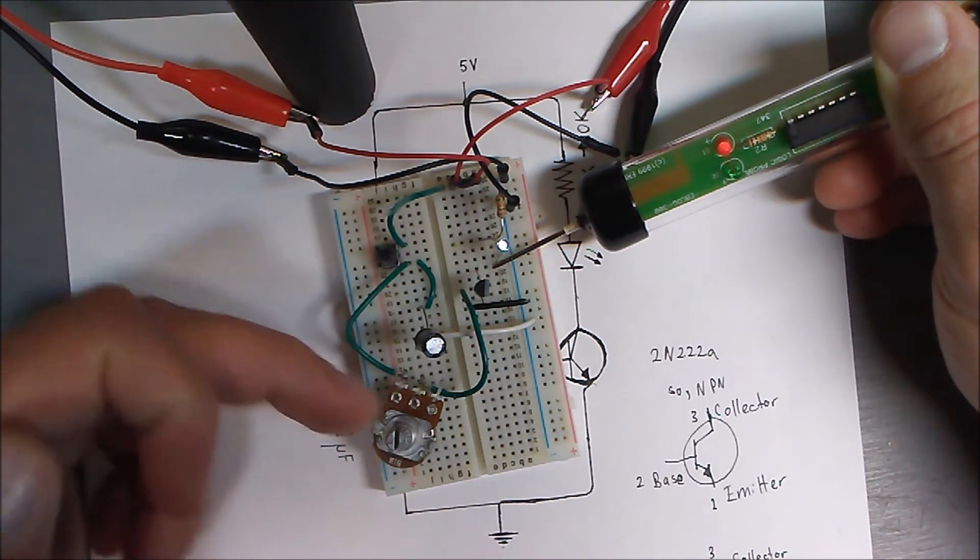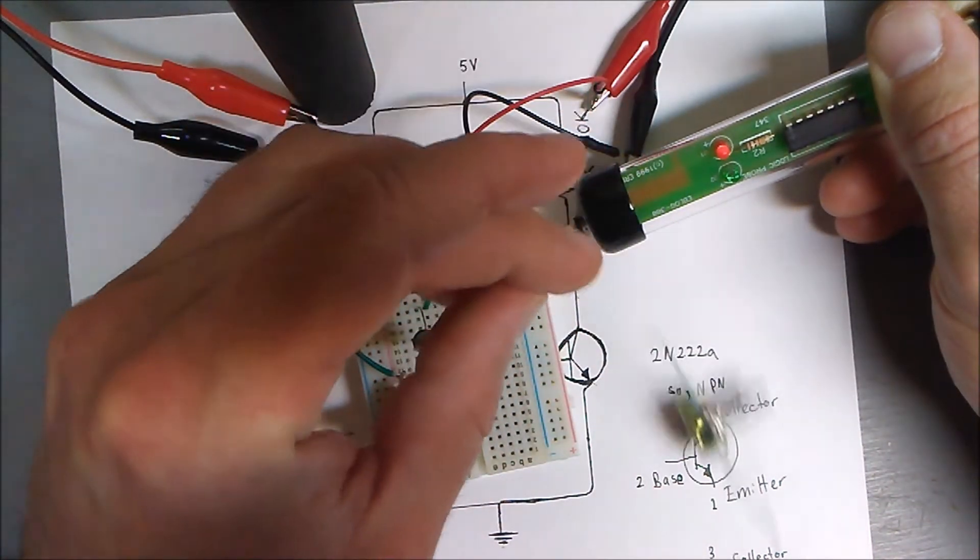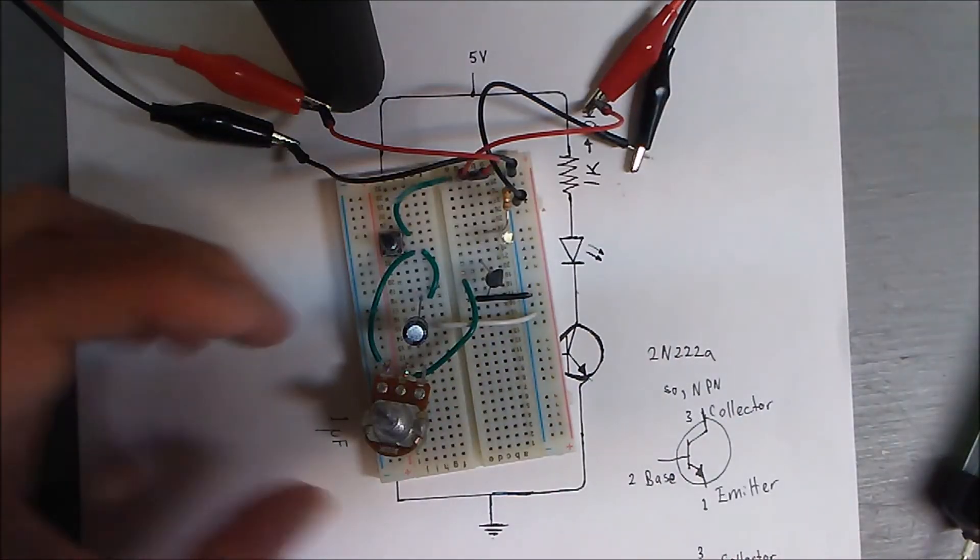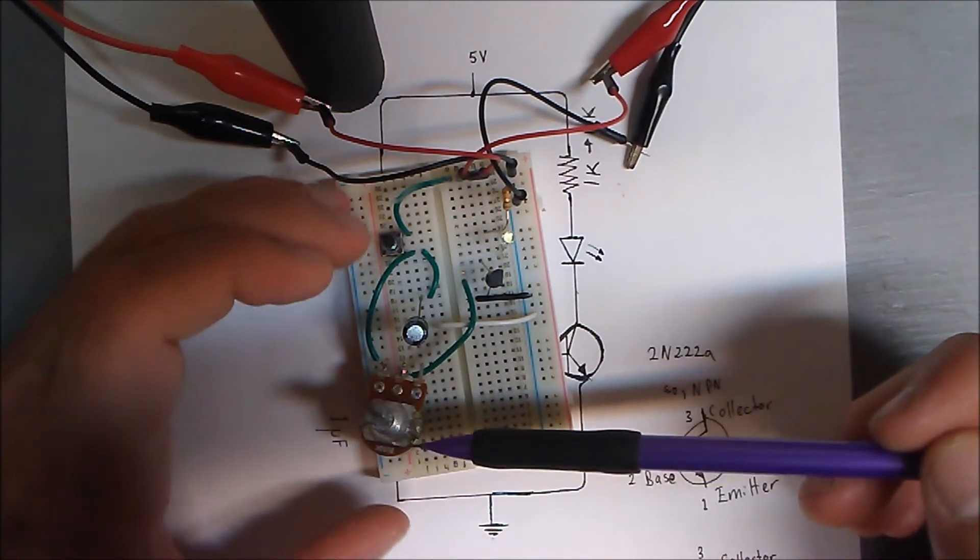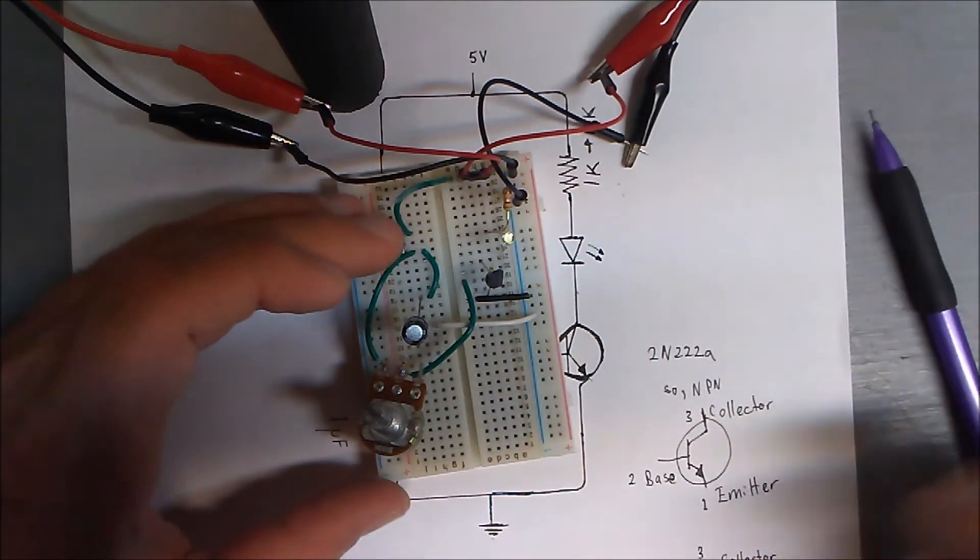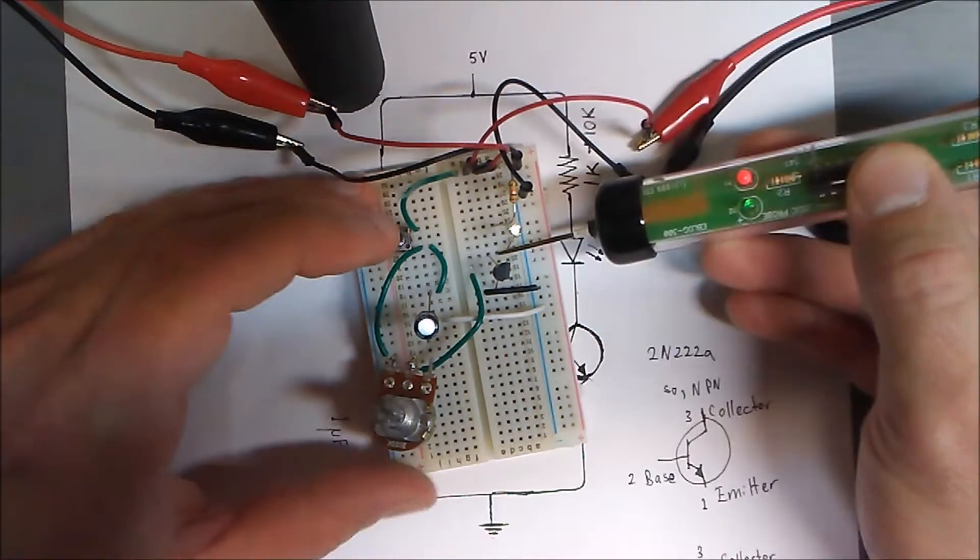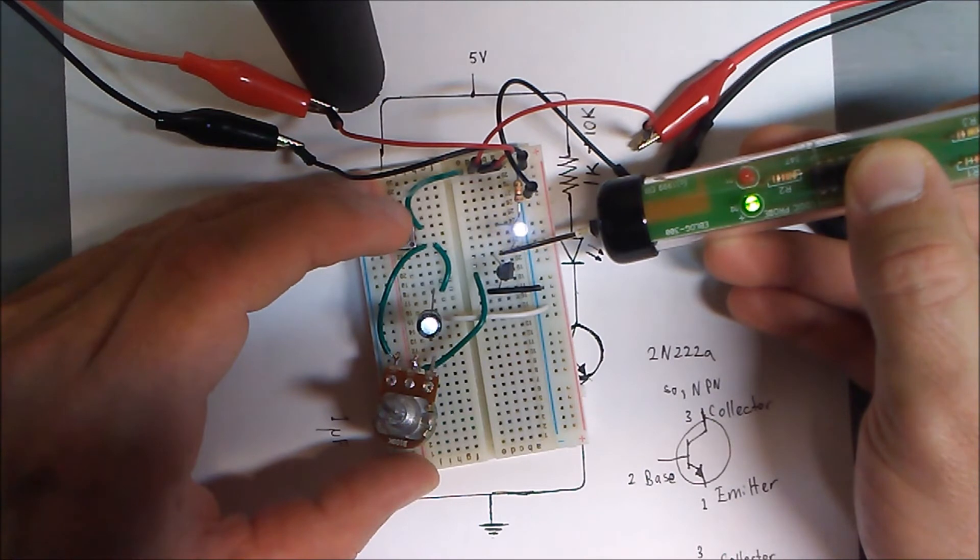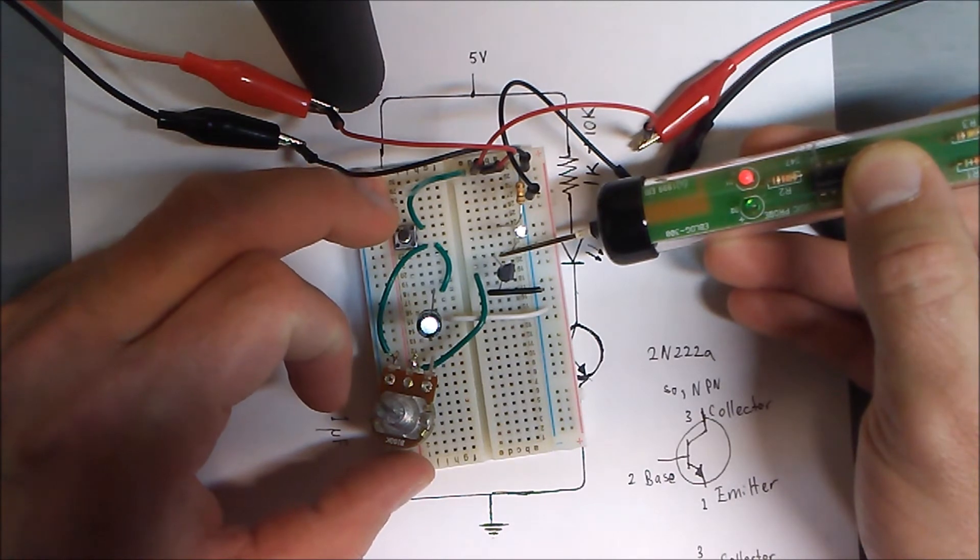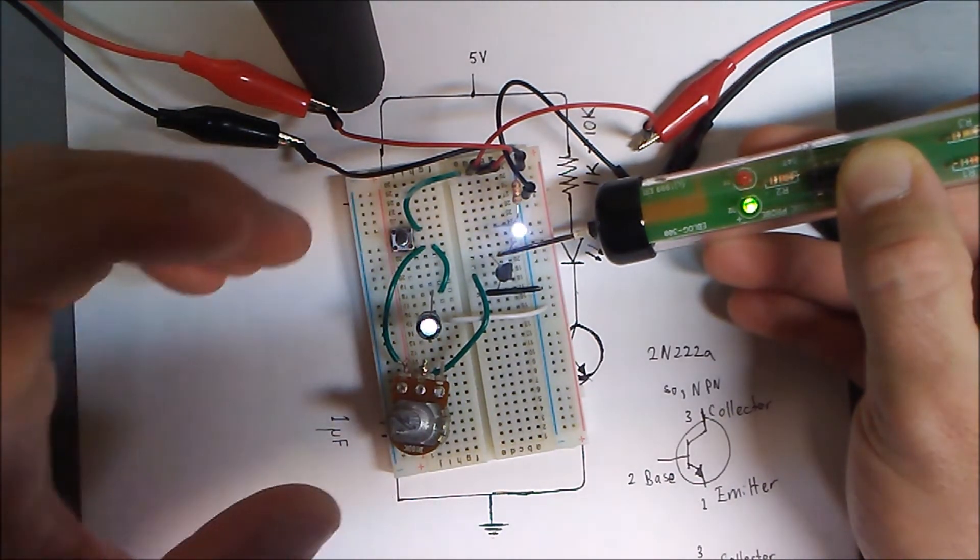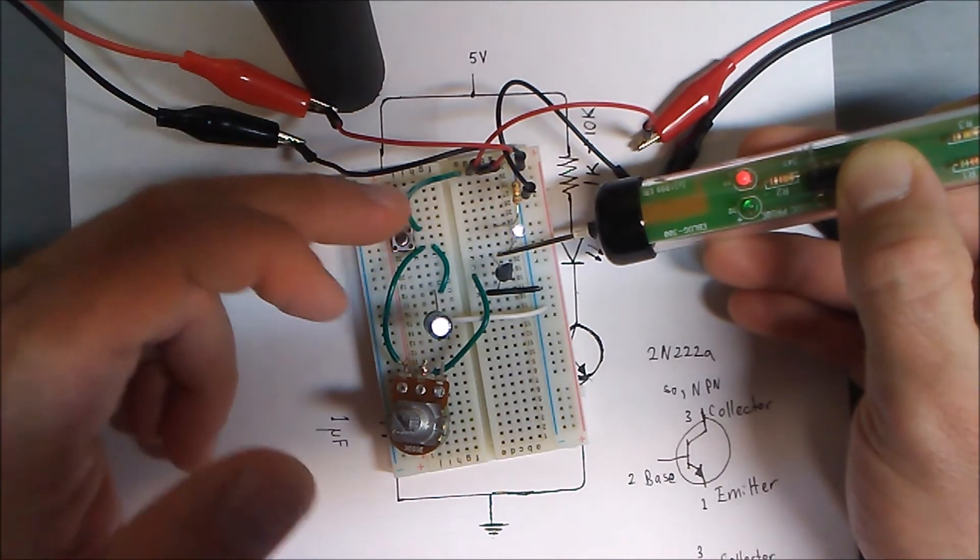Now I'm going to swap this one mega ohm variable potentiometer out for a 100k variable potentiometer. Now I put a 100k variable potentiometer in the circuit. This is 100k twisted all the way that way, and I'll show my logic probe. That's about two to three seconds, a very short delay.